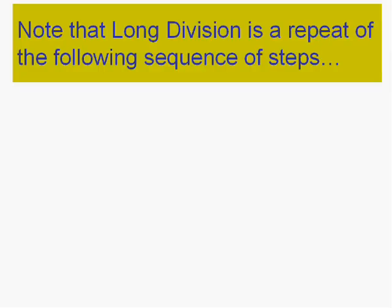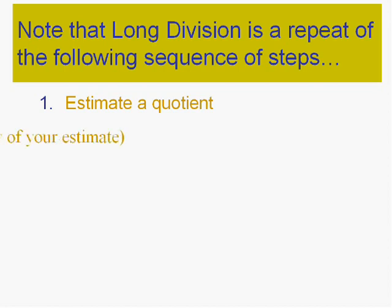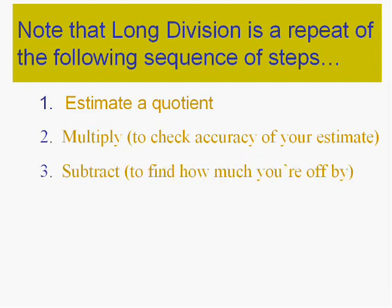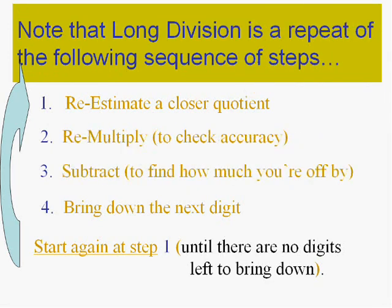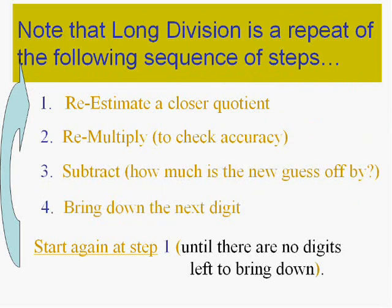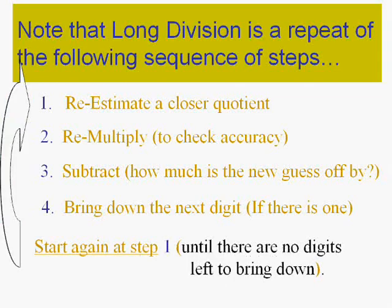Recall that basically it was a repetition of the following steps. We estimated an answer. Of course the answer to a division problem is called the quotient. So we estimated a quotient. Then we multiplied and subtracted to find out how much we were off by. Then we brought down the next digit. Then what did we do? We went right back and started again. We estimated a quotient, multiplied again, subtracted again, and we brought down the next digit again. And we kept doing that until there were no digits left to bring down, didn't we? We kept going back and doing these four steps.